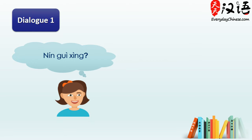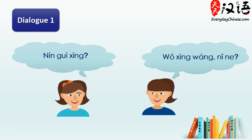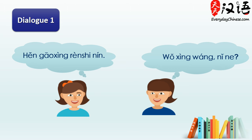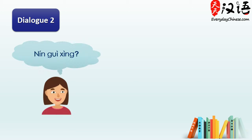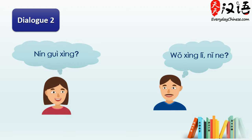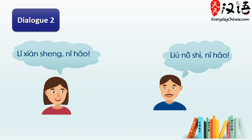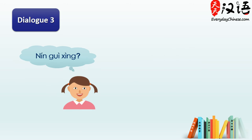您贵姓? 我姓王，你呢? 我姓陈，很高兴认识您。 我也很高兴认识您。 您贵姓? 我姓李，你呢? 我姓刘，李先生，你好。 刘女士，你好。 您贵姓? 我姓王。